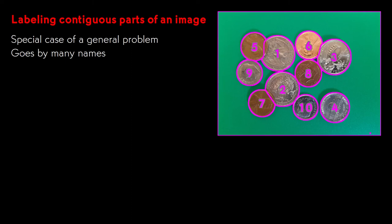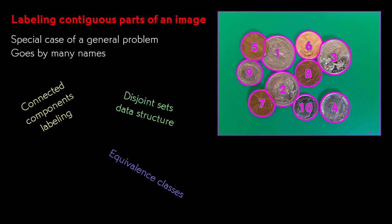This task is a special case of a general problem that goes by many names because it turns up in so many places in computing. If you want to search for it with a search engine, you need to look at a whole array of keywords and phrases. It's called connected component labeling, or disjoint sets data structure, or the problem of finding equivalence classes, or the union find algorithm. As you may have guessed from the names, it comes up in many domains other than image processing.